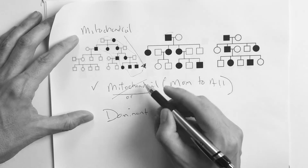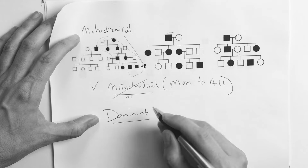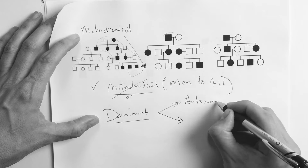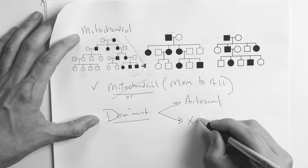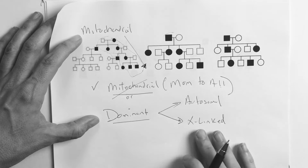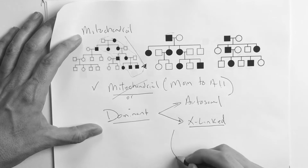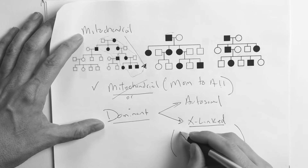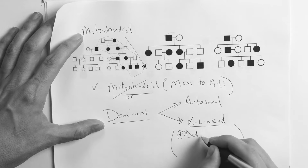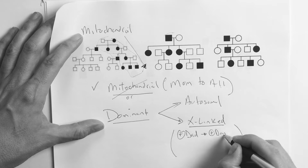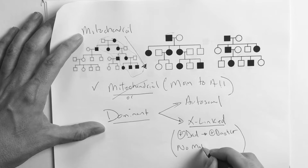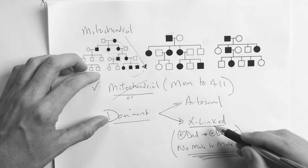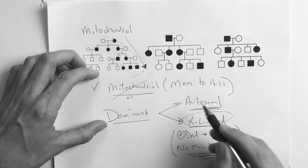Once you take care of that and rule out mitochondrial, if it's in every generation you know it's dominant. Now the question becomes: is it autosomal or X-linked? You're always going to go to X-linked and ask the question: does a positive dad give a positive daughter, and is there no male-to-male transmission? Ask those questions — that will lead you there, and you'll default otherwise to autosomal.